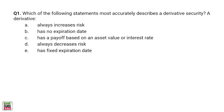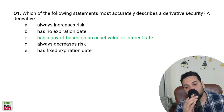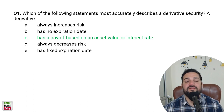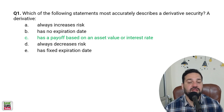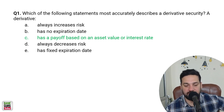Practice question: which of the following statements most accurately describes a derivative security? — It has a payoff based upon the asset value. The value of derivative contracts is based upon the value of their underlying assets.